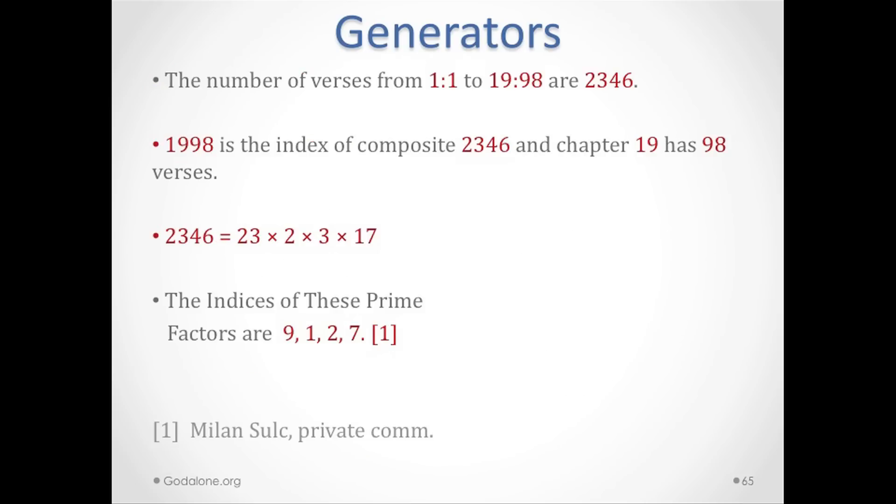The number of verses from 1:1 to 19:98 is 2346, and 1998 is the index of composite 2346. Chapter 19 has 98 verses. 2346 can be factored into 23 times 2 times 3 times 17. This is one of those composites that can be factored into primes.